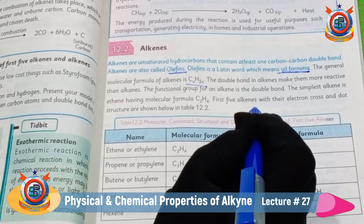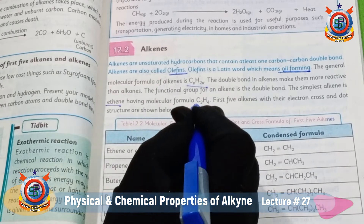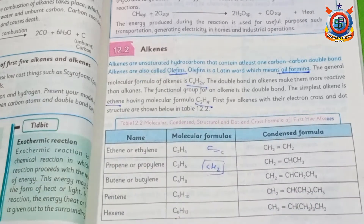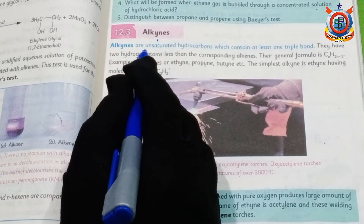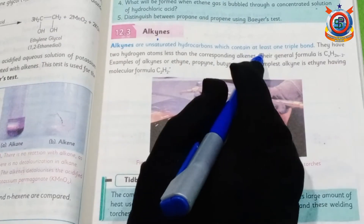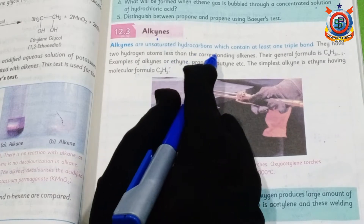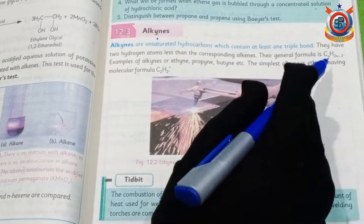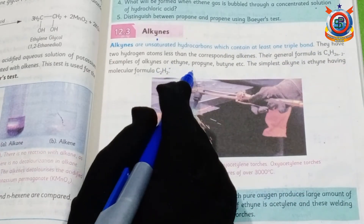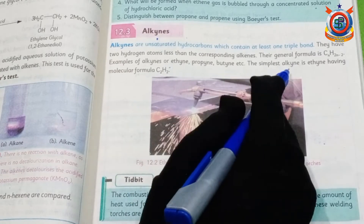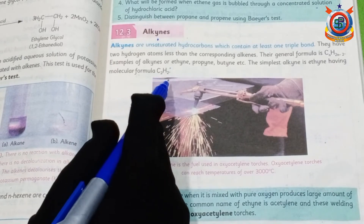For example, the simplest alkene has the formula CnH2n. Alkyne is also a type of unsaturated hydrocarbon which contains at least one triple bond. Alkynes have two hydrogen atoms less than the corresponding alkane. Their general formula is CnH2n−2. Examples are ethyne, propyne, and butyne. The simplest alkyne is ethyne with molecular formula C2H2.